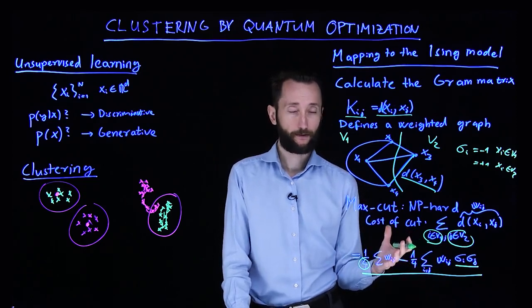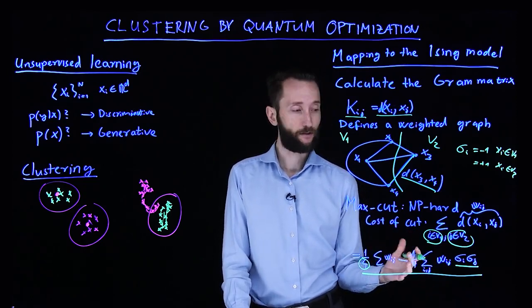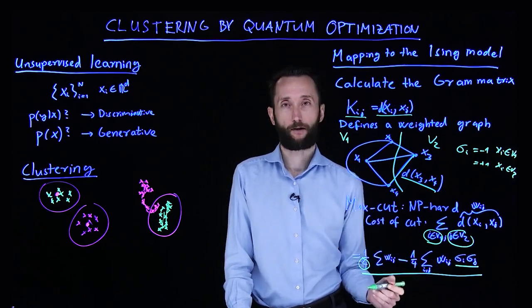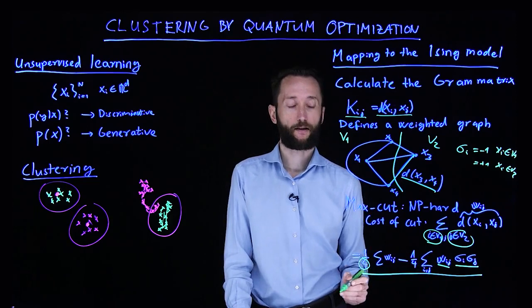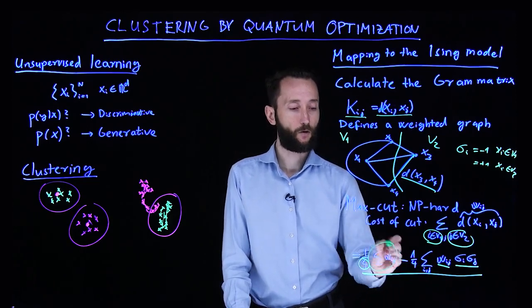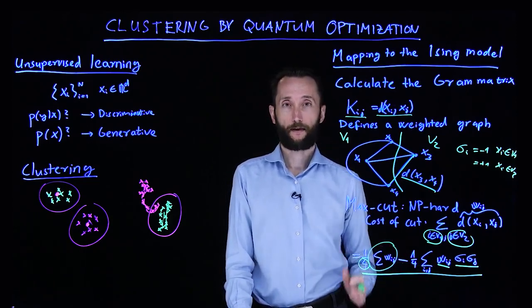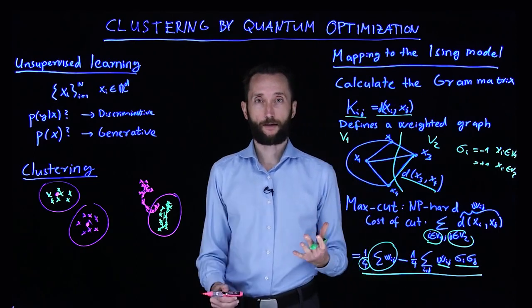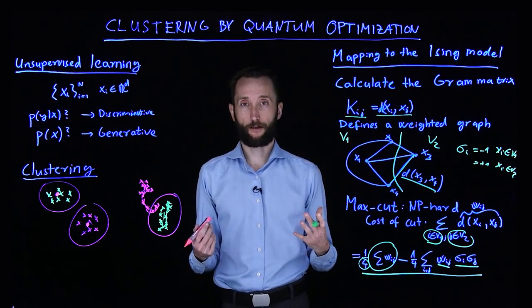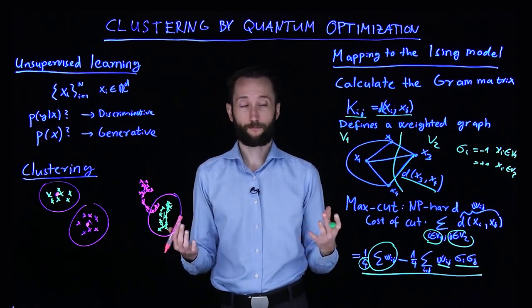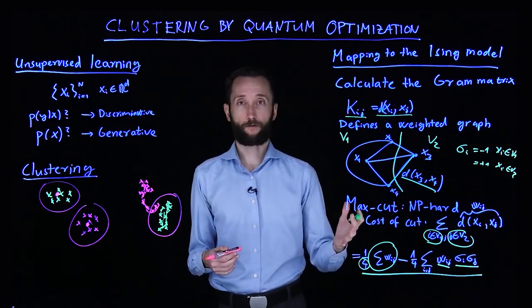When you look at it, this is exactly an Ising model. Here you have your spin variables taking plus or minus one values. Here you have the coupling strength and you have some constant offset. Now you can use quantum annealing or QAOA or any other quantum optimization subroutine that you have available and solve this problem.